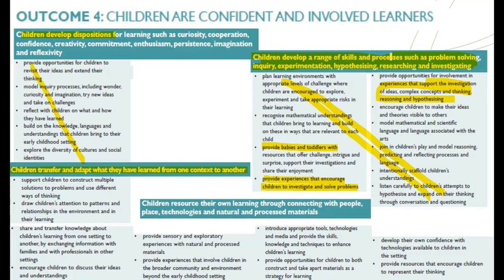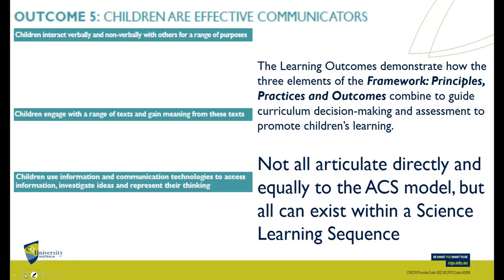When we look at these outcomes, we can easily map the Five E's onto them — even down to providing babies and toddlers with resources, providing experiences that encourage children to investigate and problem solve. The whole aim is to transfer learning, supporting children to construct multiple solutions to problems — transformational learning embedded in the Australian curriculum. We've got children developing and testing dispositions, then developing the capacities to do investigations, and finally moving into elaboration and evaluation — using technologies to apply and test theories and co-construct their own knowledge.